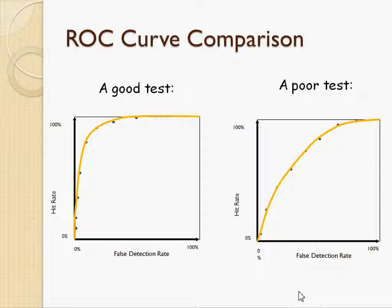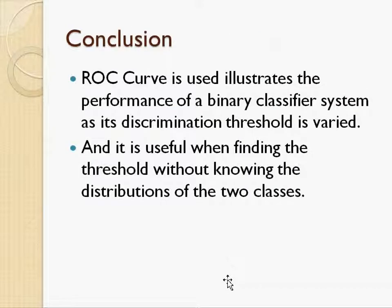This gives us a way to find the best threshold by looking at the point on the ROC curve with the shortest distance to the top-left corner. Whatever threshold makes that point occur should be your best threshold. In this way, you avoid estimating the class density for each of the classes. In conclusion, the ROC curve is used to illustrate the performance of a binary classifier system as its discrimination threshold is varied, and it is useful for finding the threshold without knowing the distribution of the two classes.